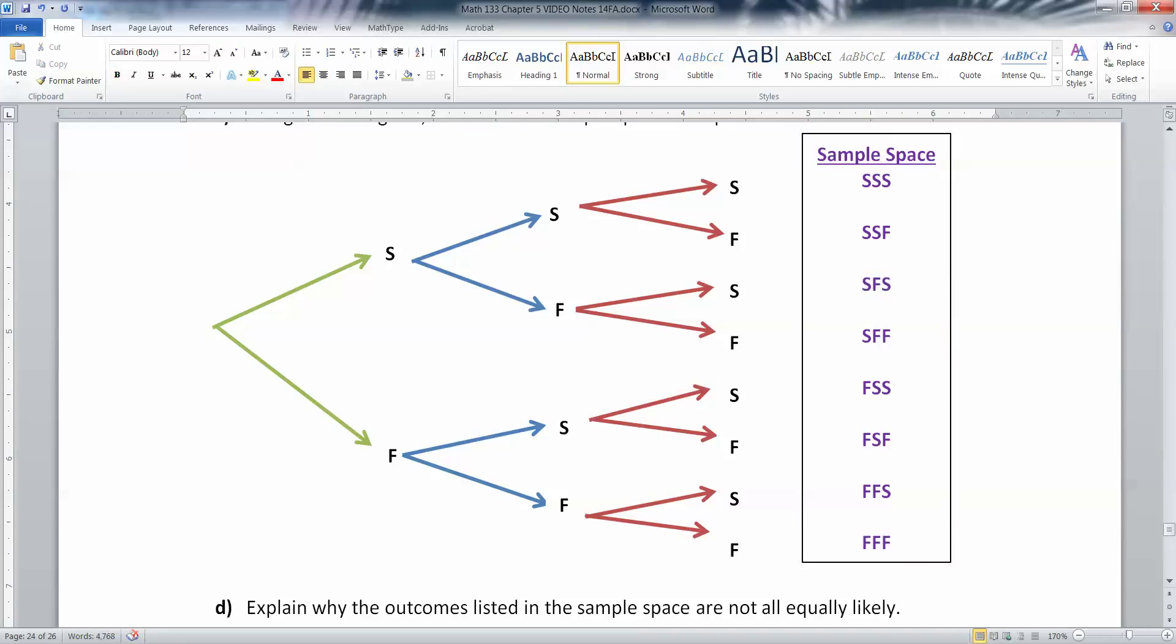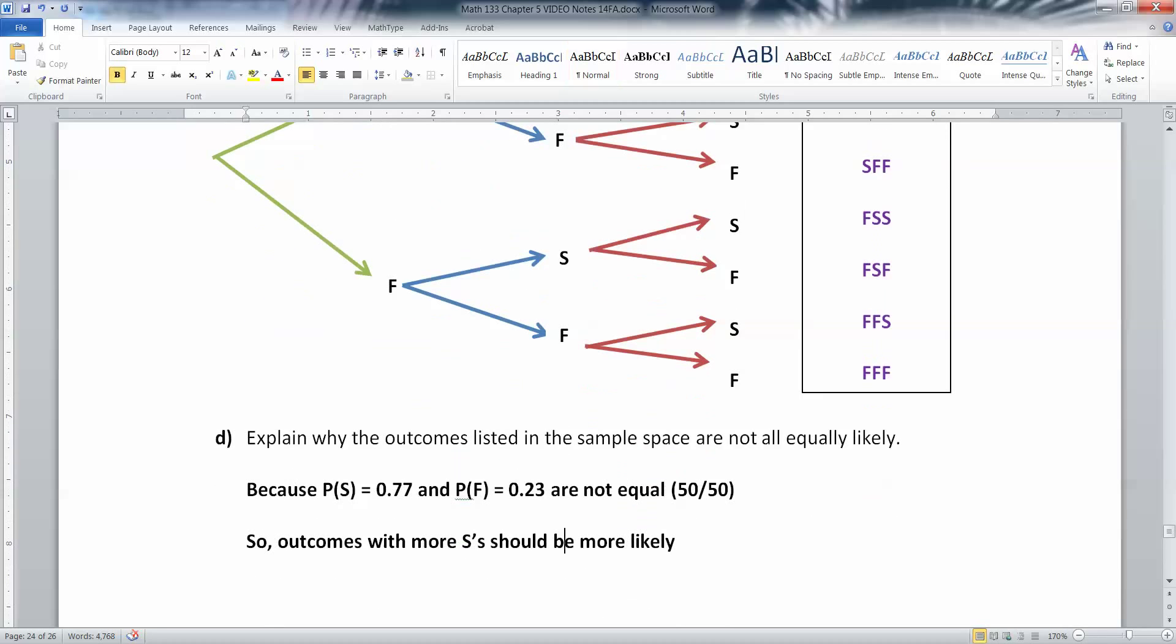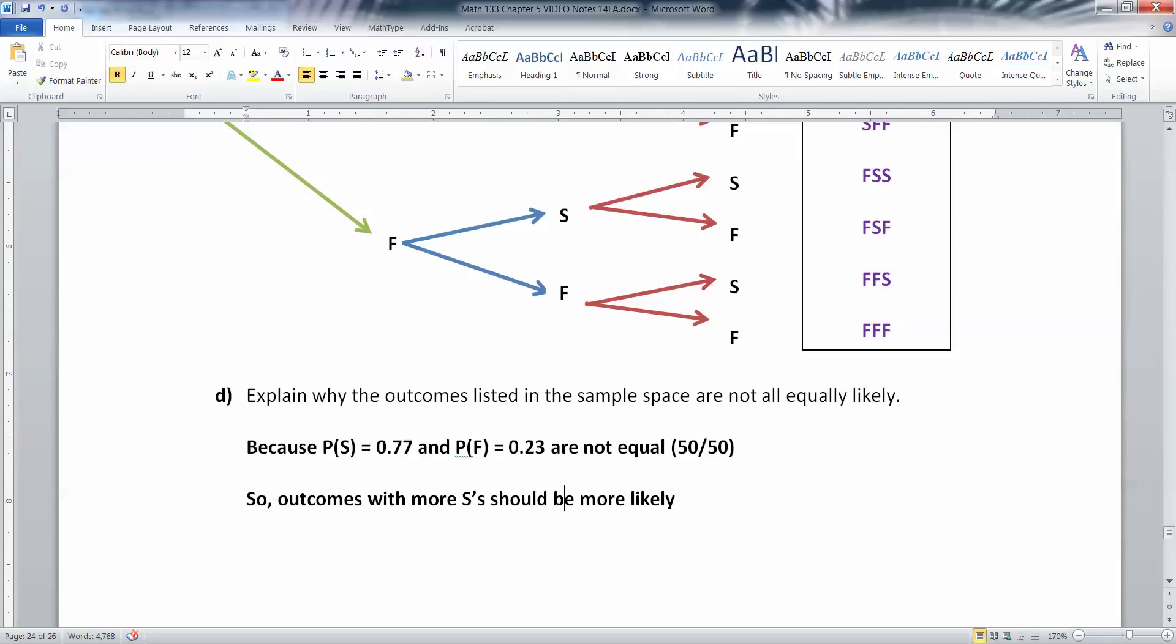However, not all these options are equally likely like they were in Section 5.1. Section 5.1 is really basic. But these are not all equally likely because our chances of success and failure are not the same. They're not equal. In Section 5.1, we assumed 50-50.